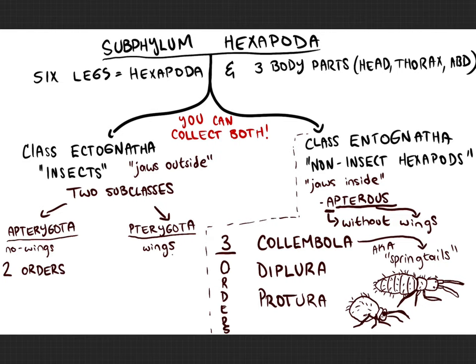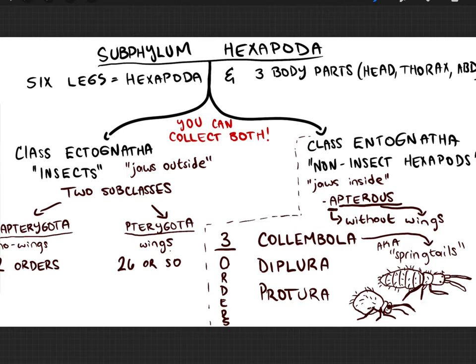The two orders of Apterygota are the Archaeognatha and the Zygentoma. The Pterygota is going to be the much larger assemblage of insects, with about 26 or so orders depending on who you ask. Recently some orders have been collapsed into larger ones, but for the sake of this course I largely keep them separate so you have a better chance of getting more orders.